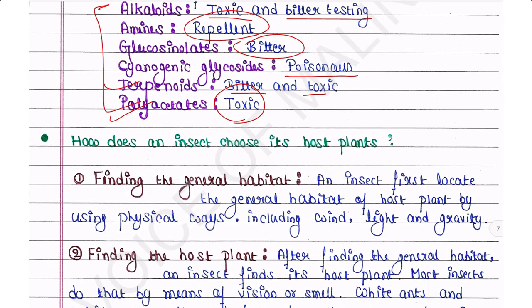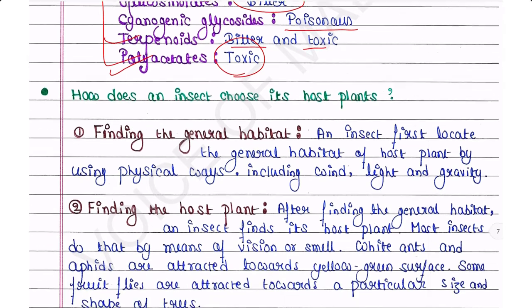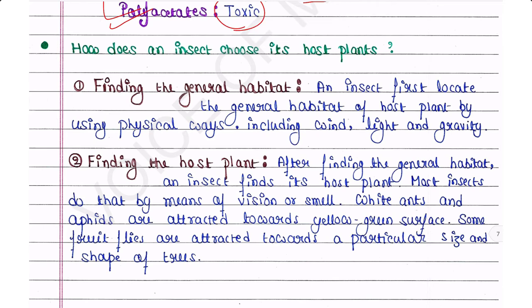How does an insect choose its host plant? First is finding the general habitat. An insect first locates the general habitat of its host plant by using physical cues including wind, light, and gravity. Using these physical ways, it can find the general habitat where host plants are present.